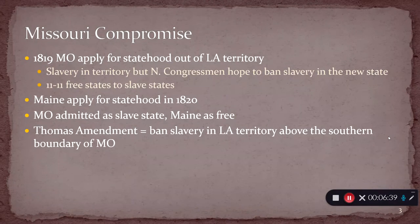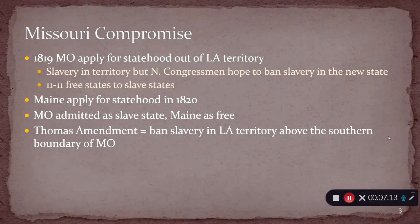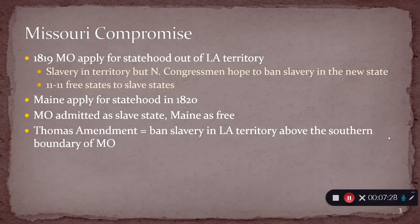In 1819, residents of Missouri start to go through the process of applying for statehood. We haven't had a new state since 1959, so it's been a long time since people have actually experienced the process of adding a state. Missouri as a territory allowed slavery, but when it's trying to be admitted as a state, Northern congressmen in particular are starting to push back against that idea, because there is a very equal balance of 11 free states and 11 slave states in Congress at that time.